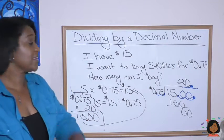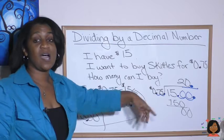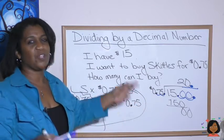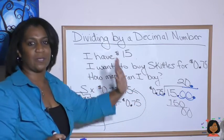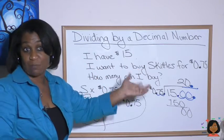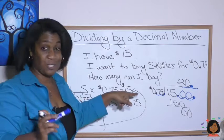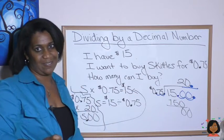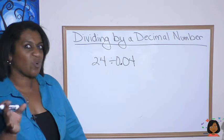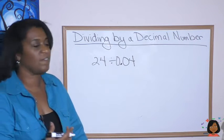The process is anytime you have a decimal in your divisor, you have to clear it by moving it to the right. As many places as it takes to clear it. But you've got to do the same to the dividend. This time, let's take a look at it without the word problem. Let's just do the division.